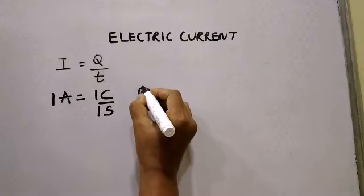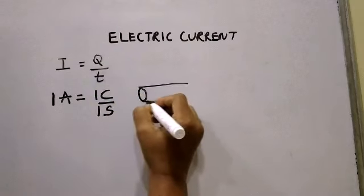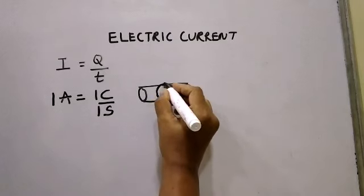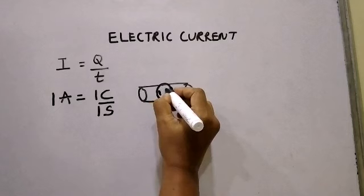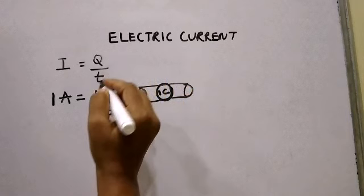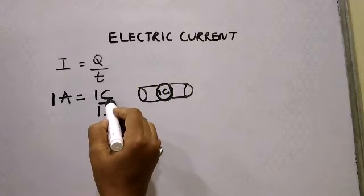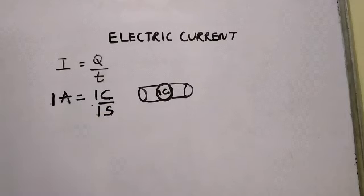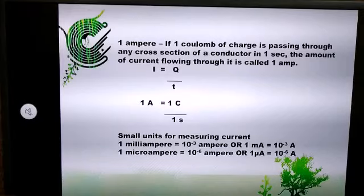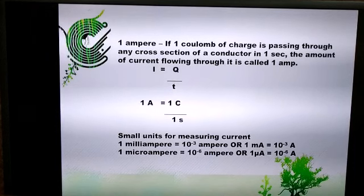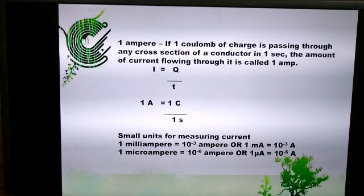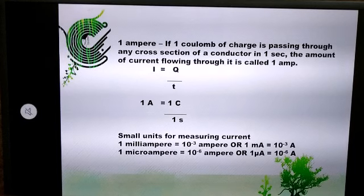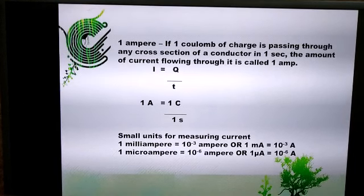If this is a conductor and this is the cross-sectional area of a conductor that I am considering, how much charge should flow through this? 1 coulomb of charge — in 1 second. So, if a charge of 1 coulomb flows through a cross-sectional area of a conductor in one second, then the current is called 1 ampere. If 1 coulomb of charge is passing through any cross-sectional area of a conductor in one second, then the amount of current flowing through it is called 1 ampere.